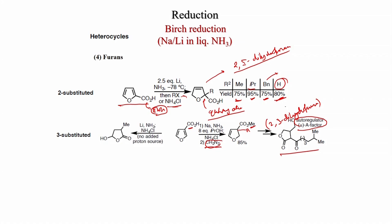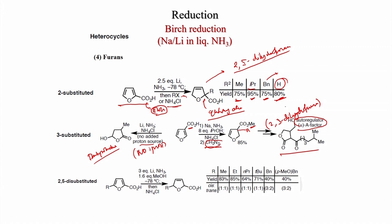Alternatively, treating the 3-substituted furan compound with lithium in ammonia and ammonium chloride but without added isopropanol as proton source leads to formation of a butyrolactone derivative — the furan motif is completely reduced to give the saturated butyrolactone.